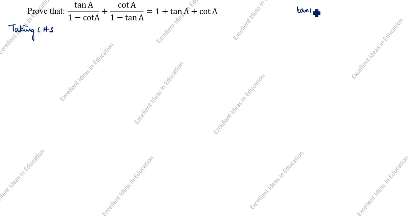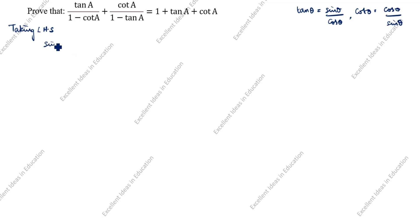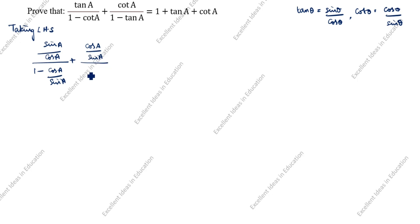First we will take LHS to prove RHS. What is the tan theta formula? Tan theta is equal to sin theta by cos theta. Cot theta is equal to cos theta divided by sin theta. We will split as per this formula. Tan A we will write as sin A divided by cos A, and cot A we will write as cos A divided by sin A.